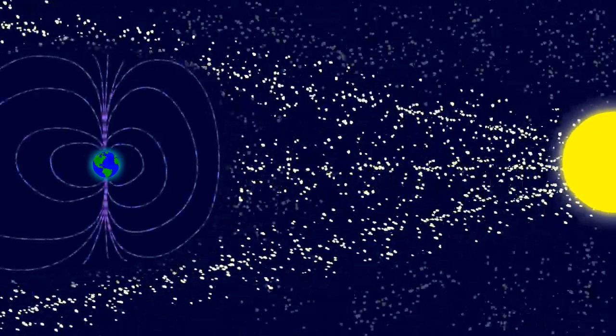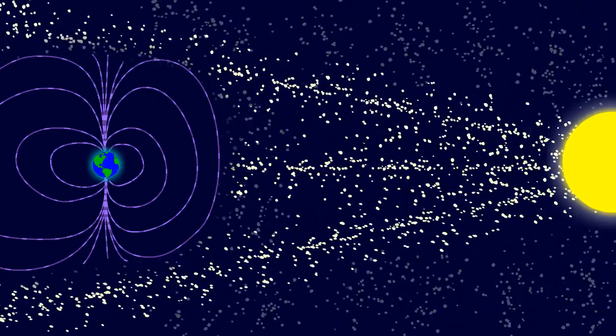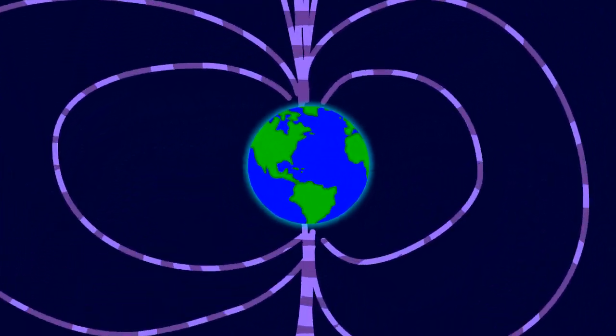Energetic particles shoot out from the Sun and get deflected by the Earth's magnetic field. That's what keeps us safe and makes those beautiful auroras at the Earth's poles.